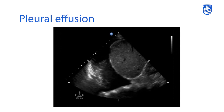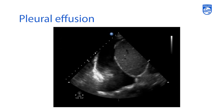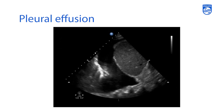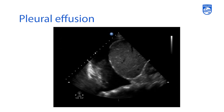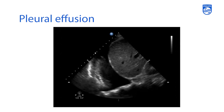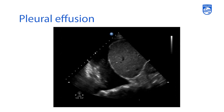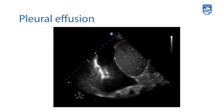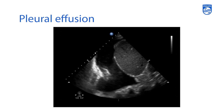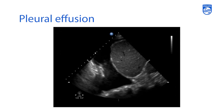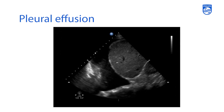So oftentimes if you're not sure if there's a pleural effusion but you see the spine behind the lung, then you have an understanding that indeed there must be some sort of effusion that's propagating the ultrasound signal so that you can visualize a posterior structure such as the spine.